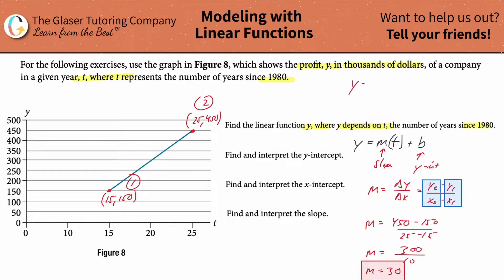So in terms of my linear model, I now have Y is equal to M times time plus B. Instead of having M here, the slope, I'm going to now write 30. So far, I'm getting closer to my linear model. I need to now find the Y intercept. That's the next step.